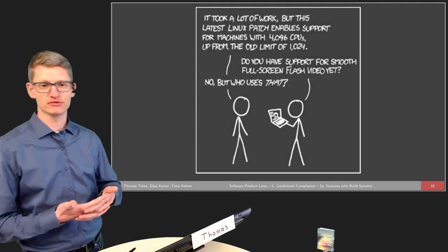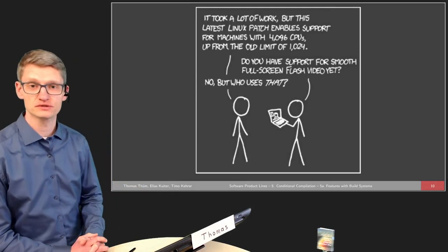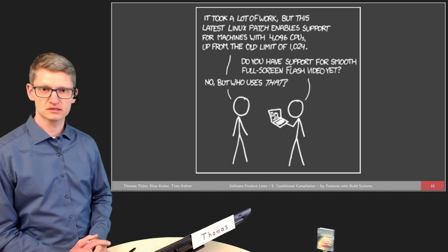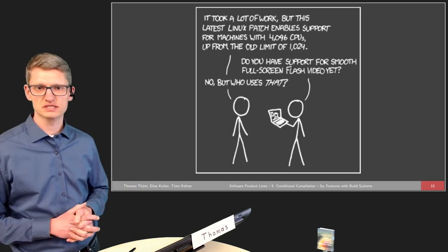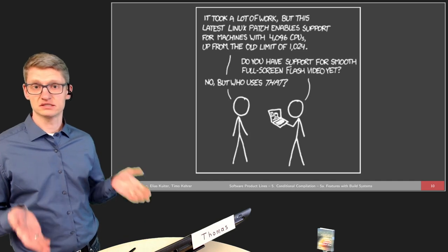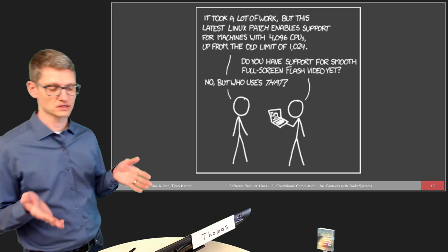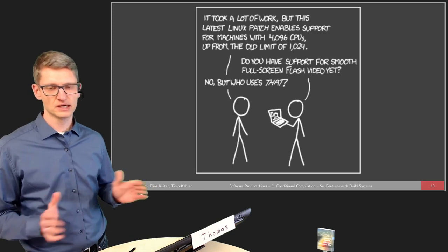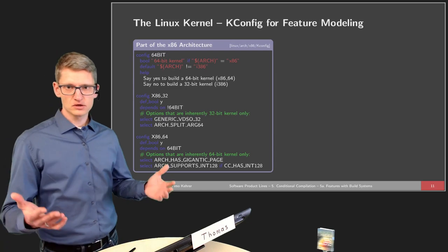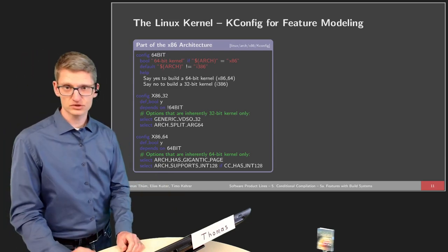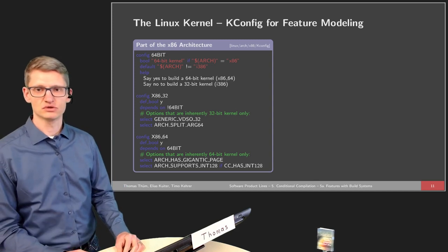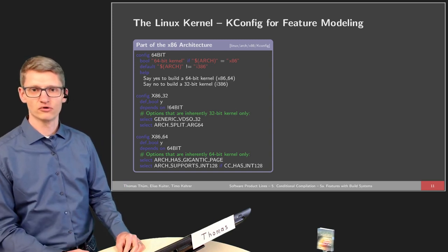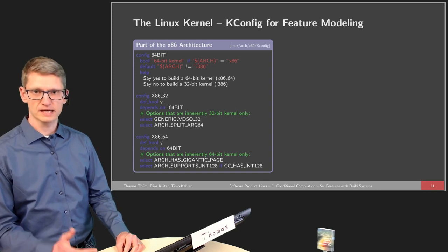From the introductory lecture, we've already seen that Linux has quite a number of features, and it's getting more over time. In the next minutes we will see how Linux is developed and how it makes extensive use of build systems — specifically in the way we explained before: features realized with build systems, not in the clone and own manner.